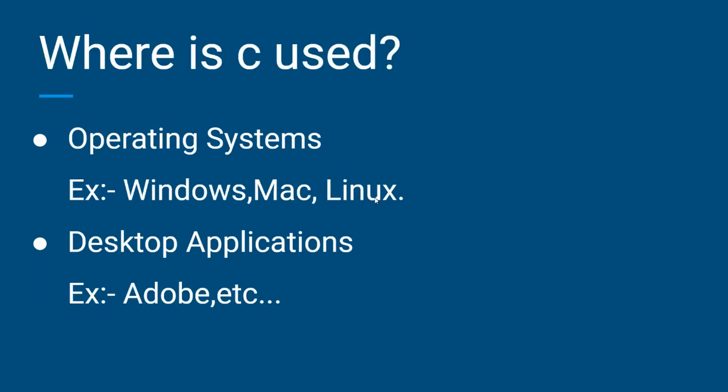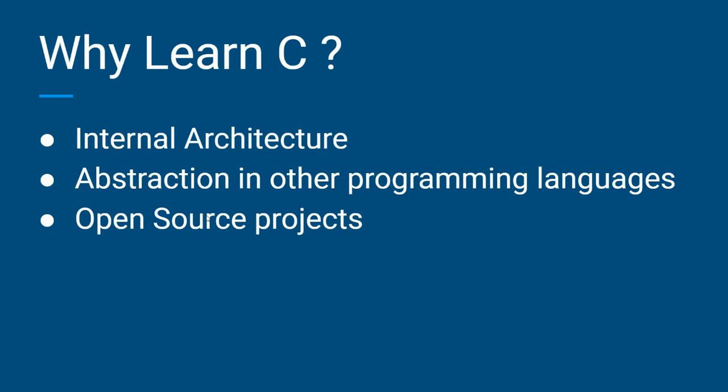Now we are going to look into the various uses of C. C was involved in many things — for example, operating systems like Windows, Mac, and Linux were developed using the C programming language. Also, applications like Adobe are developed using C.